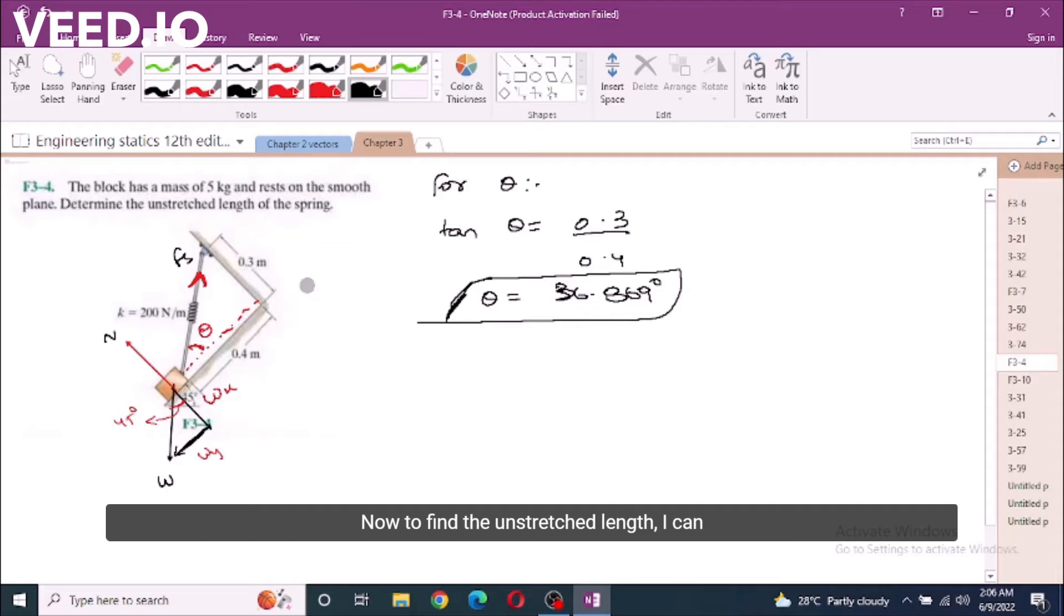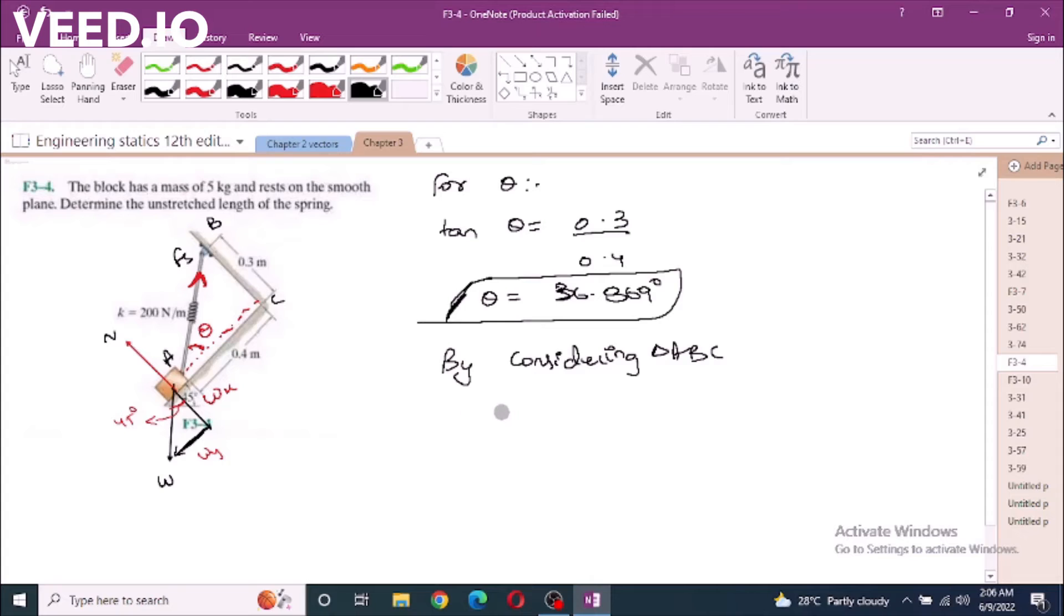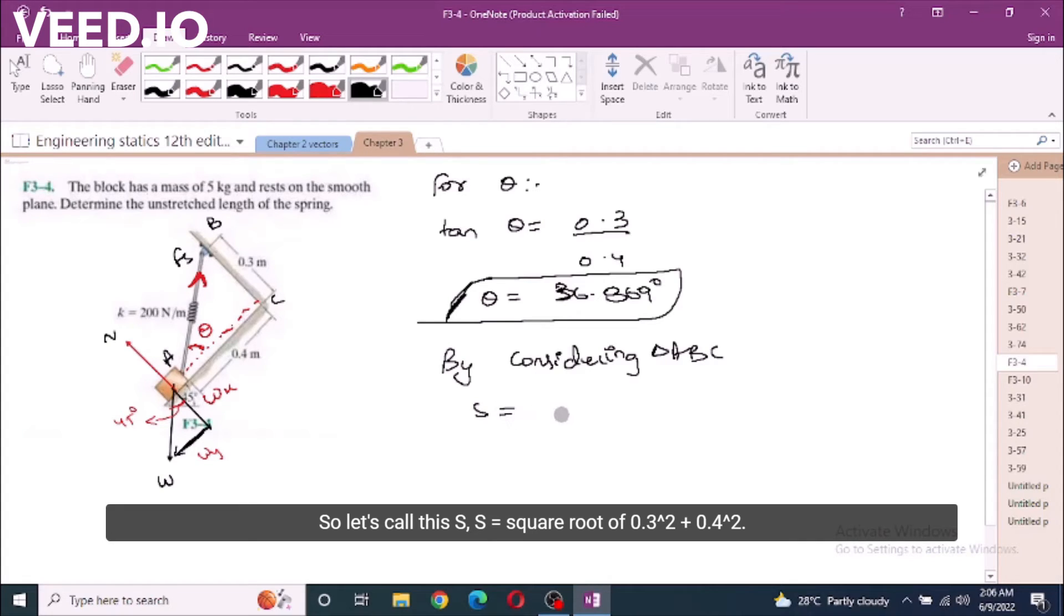Now, to find the unstretched length, I can also find the stretched length right here because if I consider this triangle A, B and C, this is the hypotenuse which is the stretched length. So, let's call this S equal to square root of 0.3² plus 0.4². So, S is equal to 0.5.